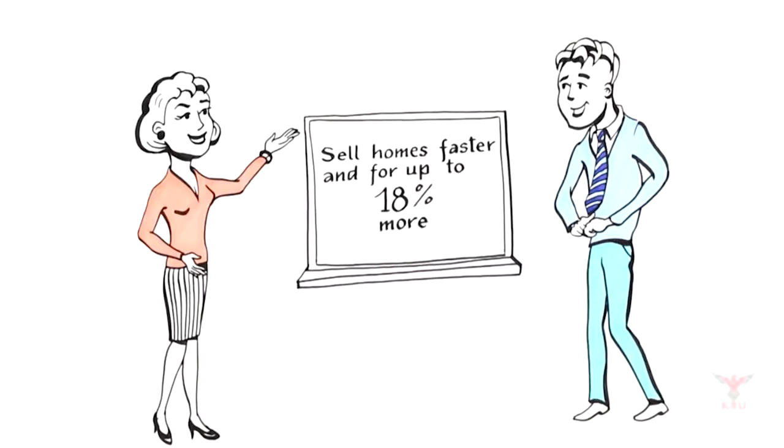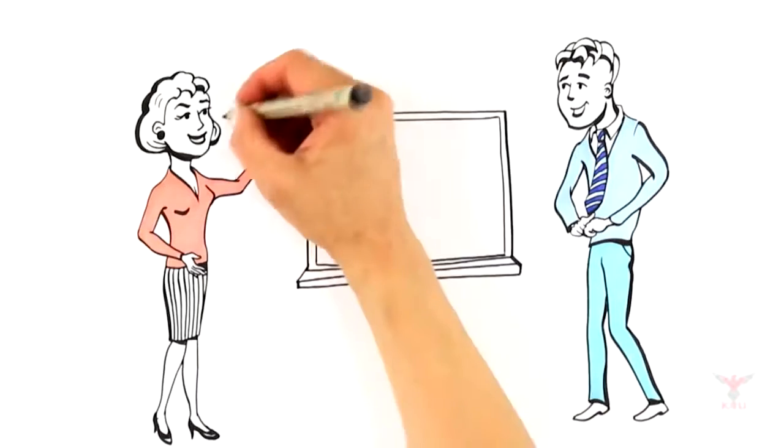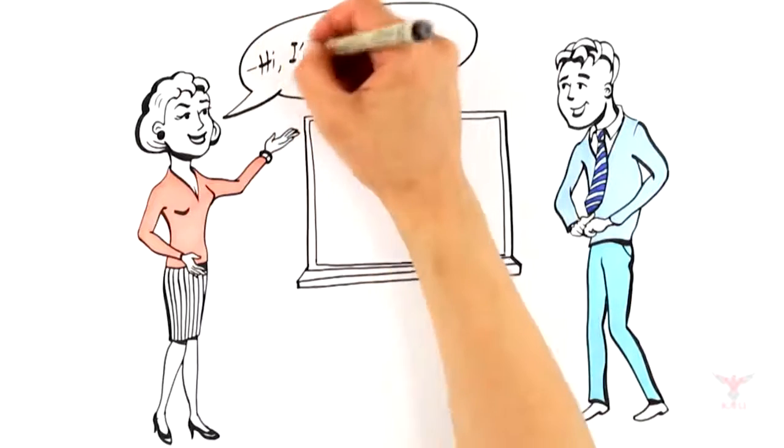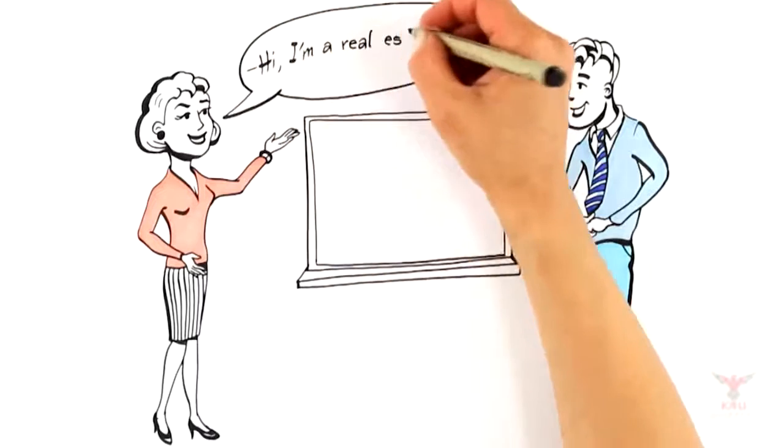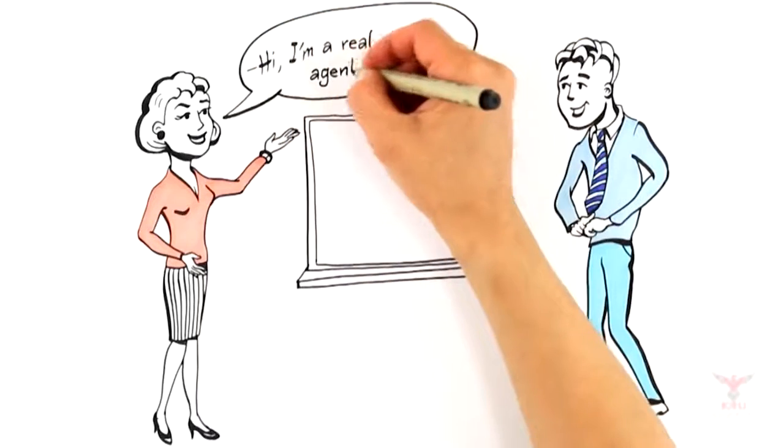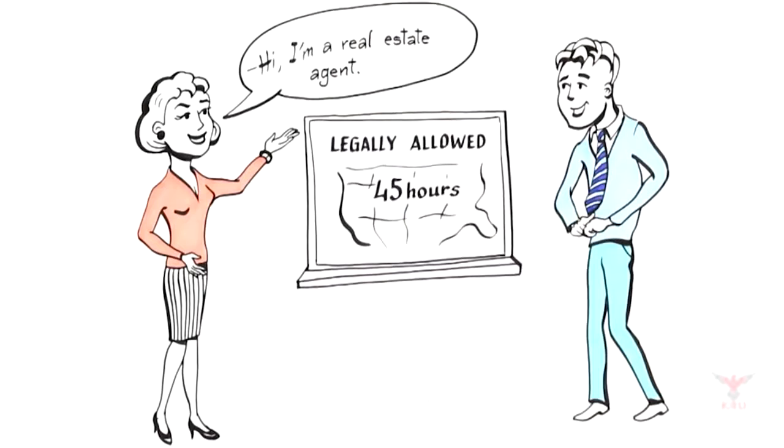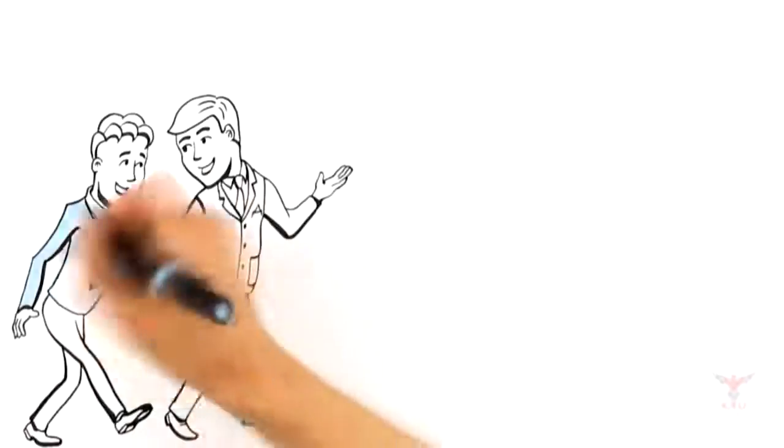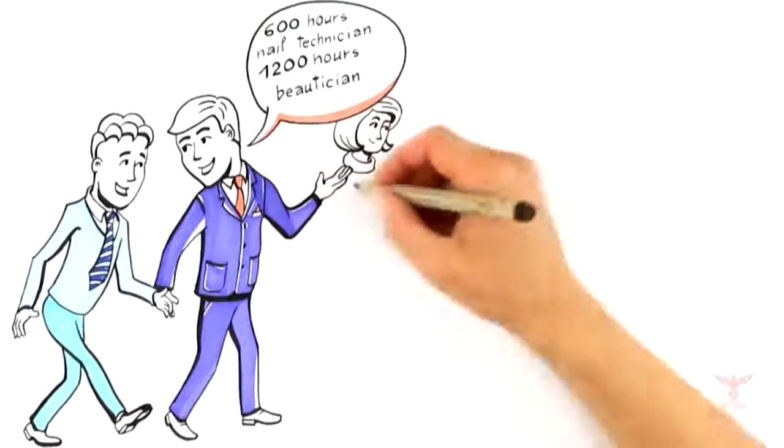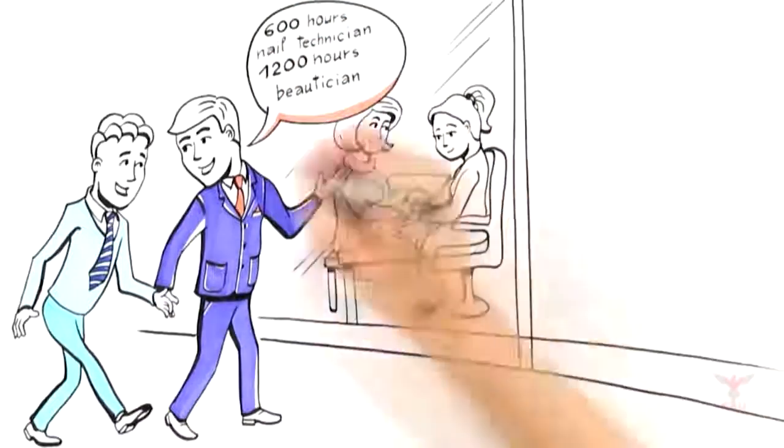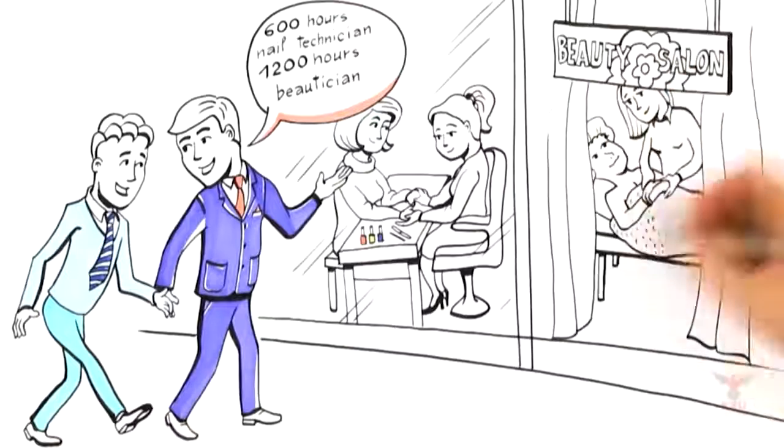As you probably know, finding an expert qualified to sell your home can be a daunting task. See, in most states, with just 45 hours of classroom time and a state exam, anyone can call themselves a real estate agent and they are legally allowed to direct the largest financial decision in your life. Compare this to other licensed occupations where it takes 600 hours to be a licensed nail technician or 1200 hours to be a licensed beautician. It's easy to see why traditional agents are poorly prepared to serve your needs.